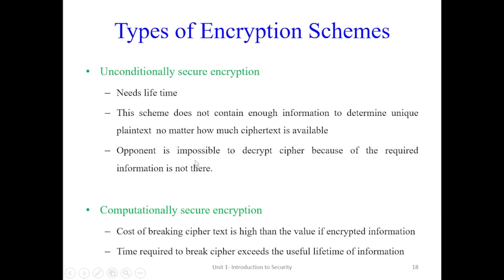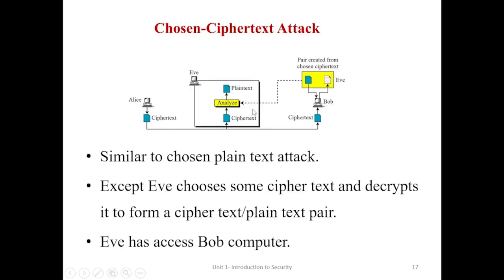The last type of attack is the chosen ciphertext attack, which is also similar to the chosen plaintext attack. But the plaintext and ciphertext lists are available at the receiver side. The attacker Eve may act as a receiver or access the receiver Bob's computer. At the receiver side, the ciphertext is already available, and Eve uses it to retrieve the corresponding plaintext from the plaintext-ciphertext list.